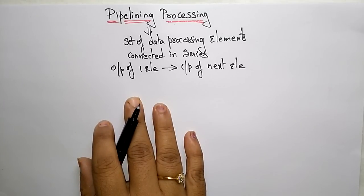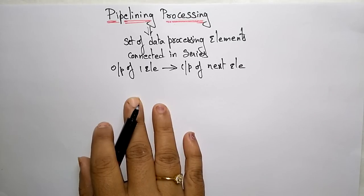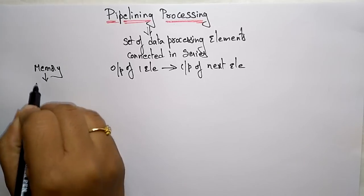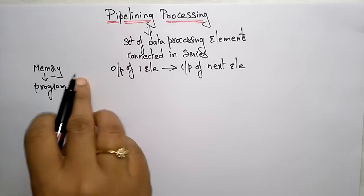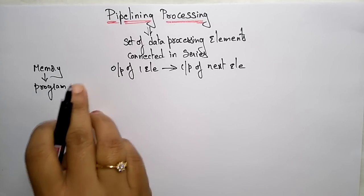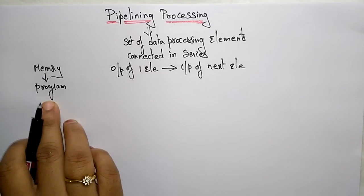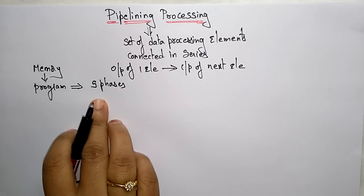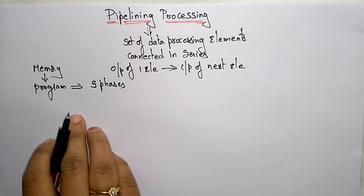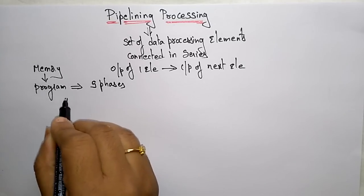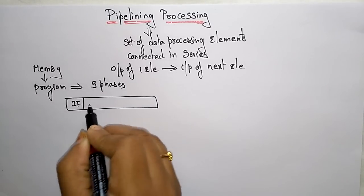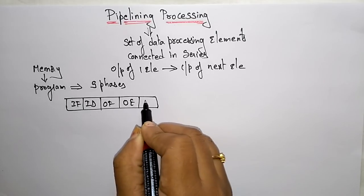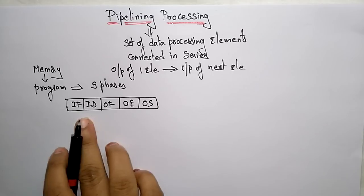Before going into the pipelining process, let us see how a program executes in the form of pipelining. A program is present in memory and we have to fetch that program from memory. Whatever instruction we want to execute will be fetched from memory. A program can be executed in five phases: instruction fetch, instruction decode, opcode fetch, opcode execute, and operand store.